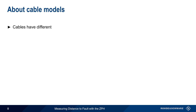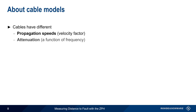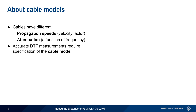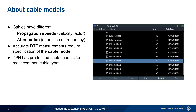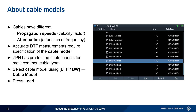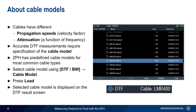The next step is specifying a cable model. Coaxial cables with different conductor spacings and different dielectrics will propagate signals at different speeds. This is called the velocity factor of a cable. They will also have different amounts of attenuation, which is a function of frequency. Therefore, accurate distance to fault measurements require the specification of a cable model, which describes both the velocity factor and the frequency-specific loss of the cable under test. The ZPH comes preloaded with a large number of models for the most common cable types, which can be chosen using DTF Bandwidth > Cable Model and then pressing Load.